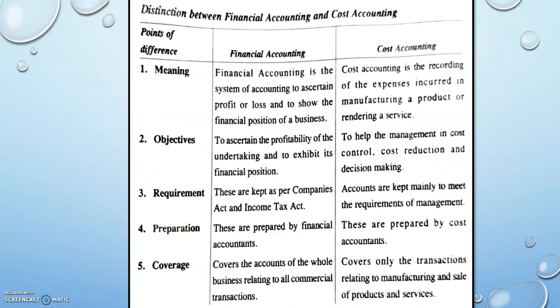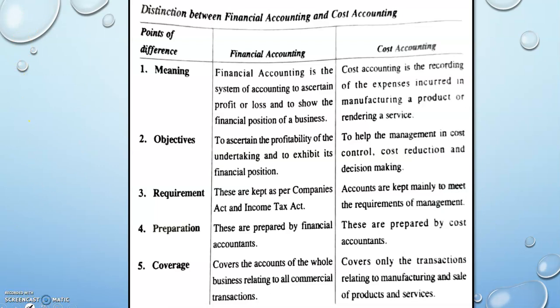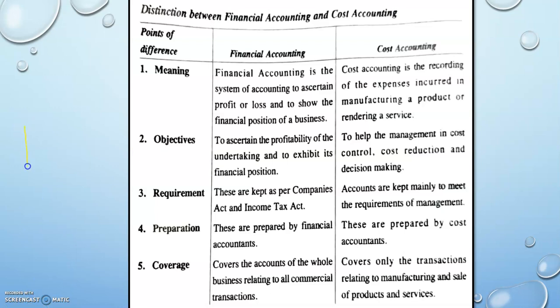Moving to the very important part — this is a 15-mark question: what is the difference between financial accounting and cost accounting? You just study the basis column. The first point is the meaning. If you are doing financial accounting for a particular business, you are determining profit or loss after the happening of an event. If you are doing cost accounting, you are accounting for a product or service.